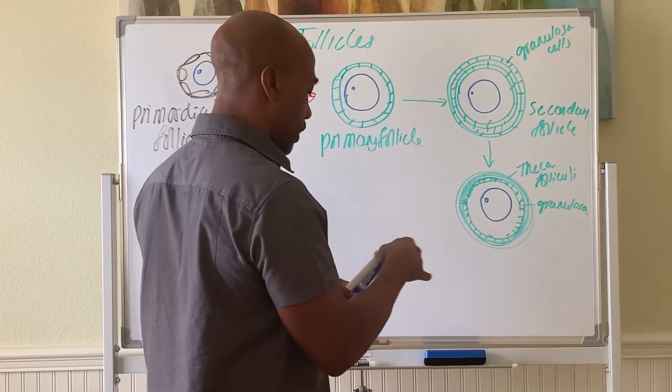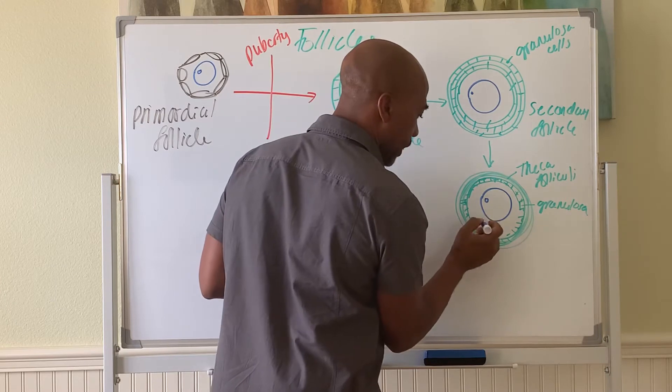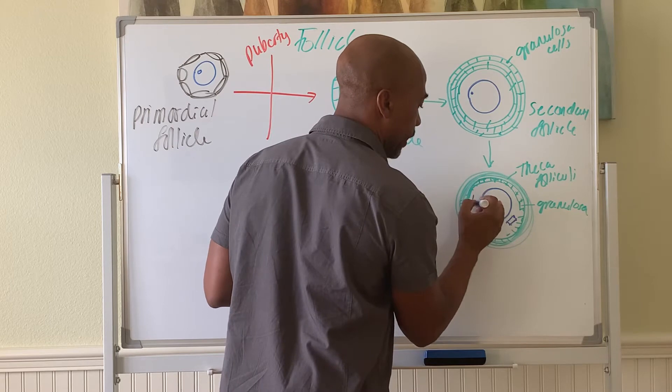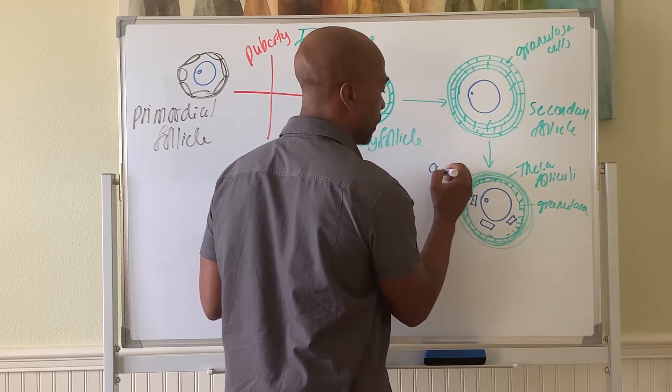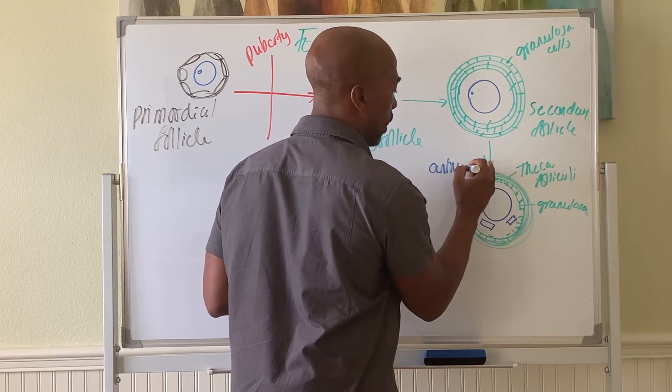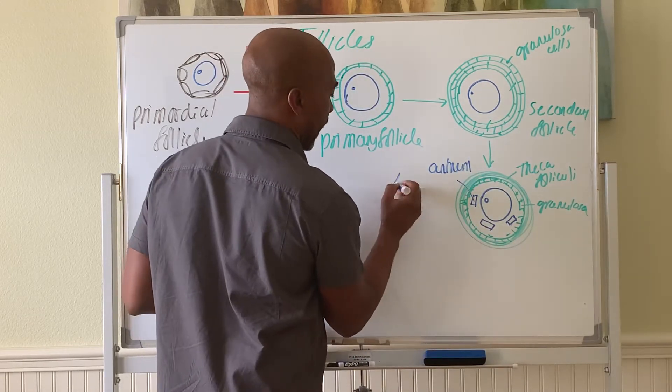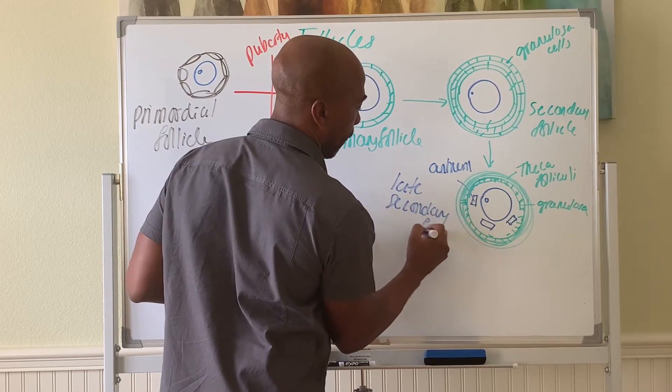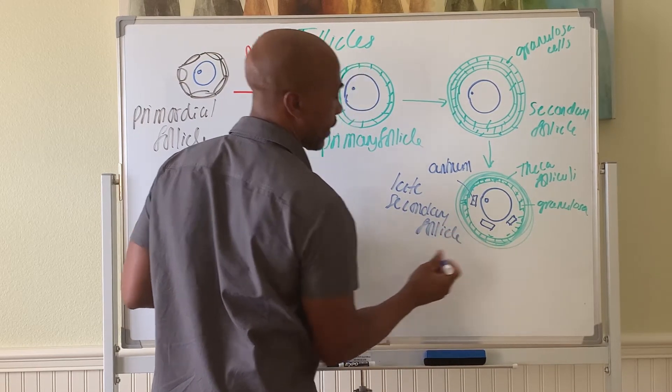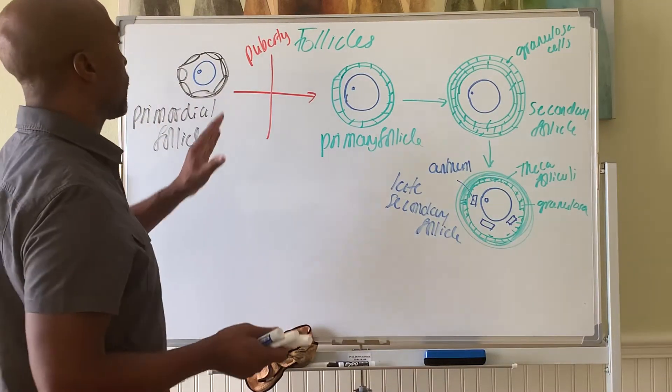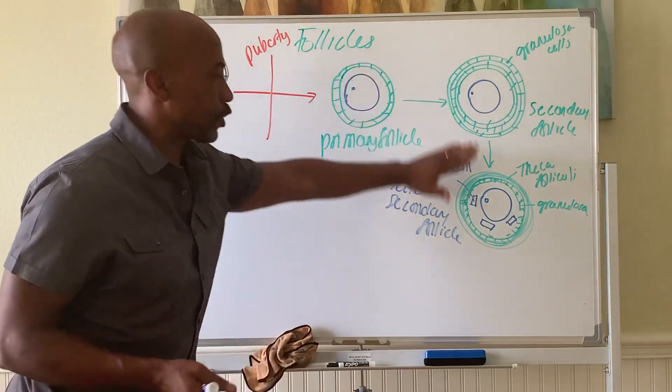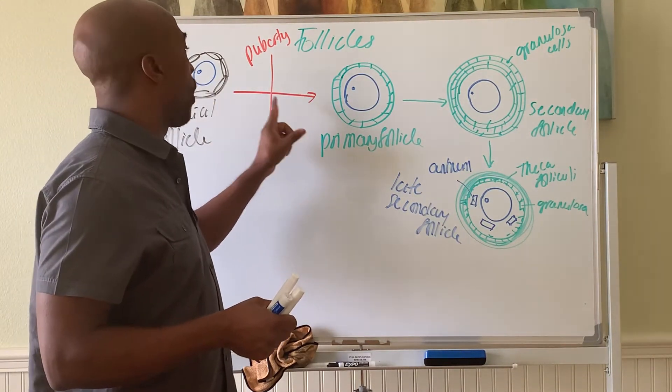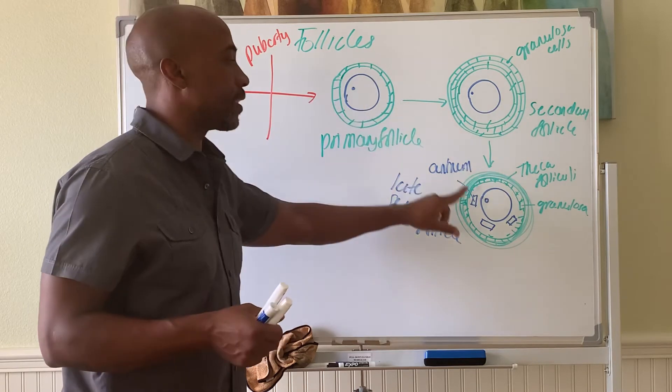And now you also start to see these little pockets of fluid appearing inside the follicle, called antrums. So this is a late secondary follicle. And going from here to here, after puberty begins, it may take a year to go from the primordial state to the late secondary state.